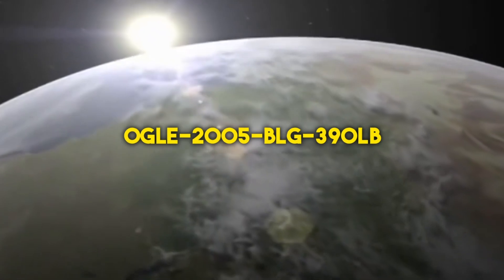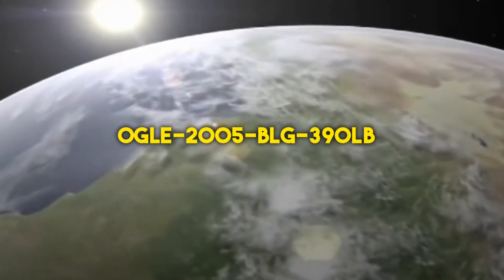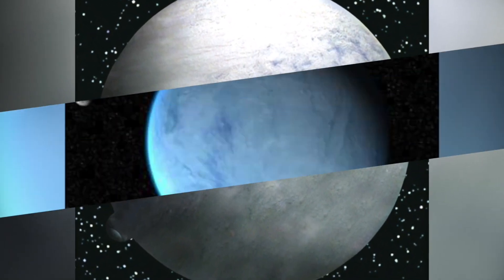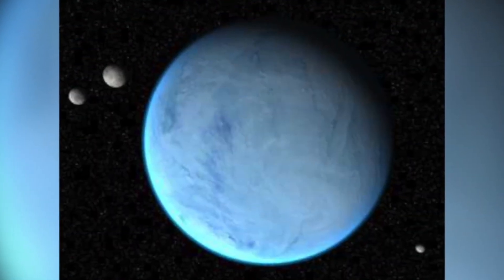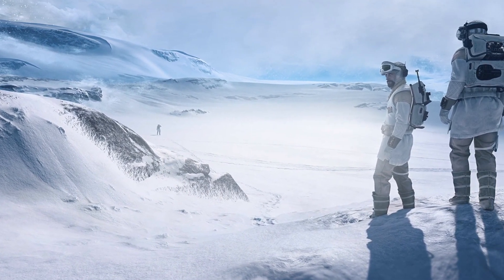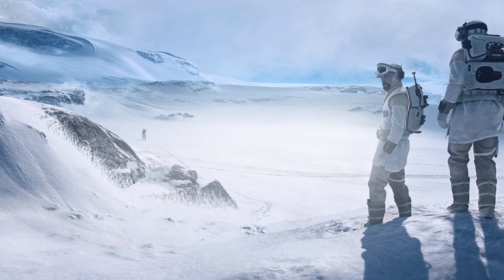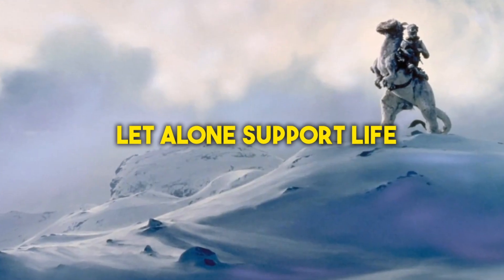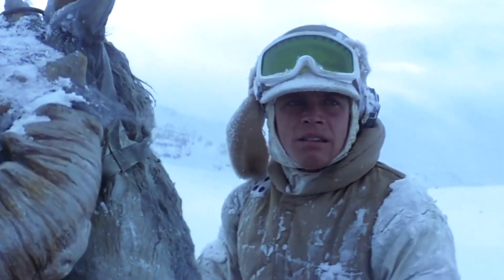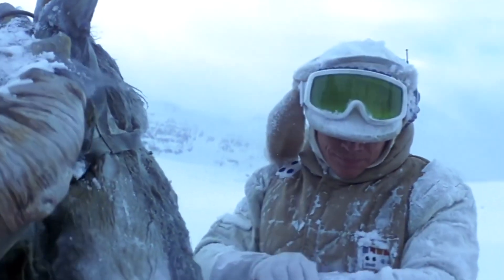Now for a bit of pop culture flair, you might have heard OGLE-2005-BLG-390Lb affectionately referred to as Hoth, a nod to the icy planet from a certain beloved space saga. But unlike its fictional counterpart, this real-life Hoth won't be hosting any rebel bases or epic battles. Why, you ask? Well, for starters, it won't be able to hold on to much of an atmosphere, let alone support life. Most of its gases would be frozen solid, adding to the thick blanket of snow that likely carpets its surface.